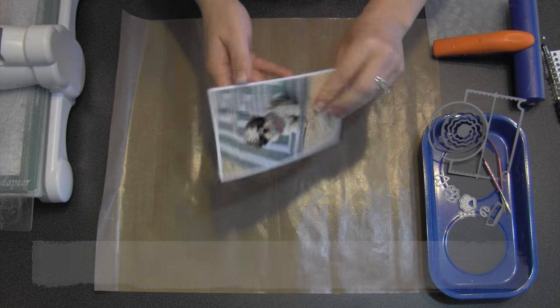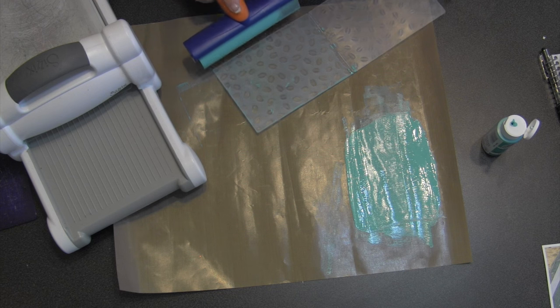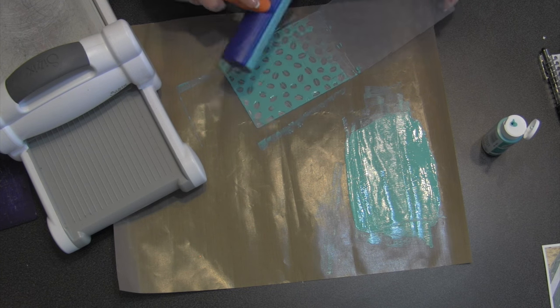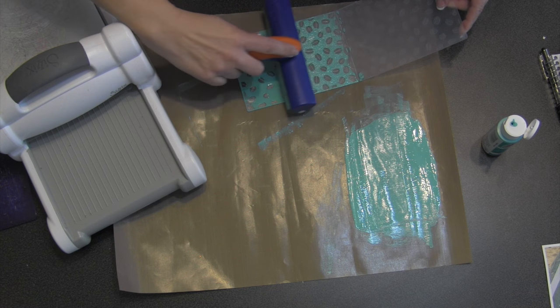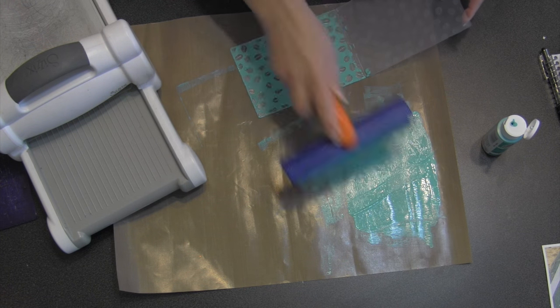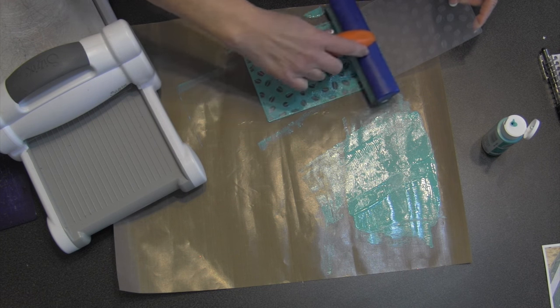Kelly loves coffee so I knew I wanted to use the new coffee bean embossing folder on brown cardstock so I'd have brown beans. But she also loves the color teal, so I'm taking a brayer and putting a generous amount of teal acrylic paint onto the side of the embossing folder that has the depressed beans.